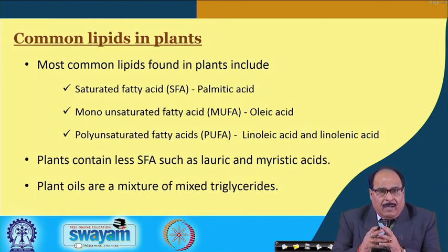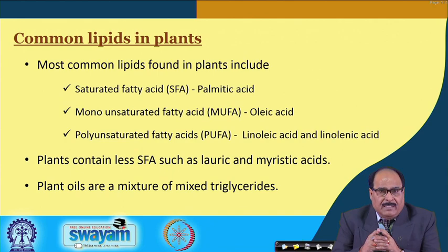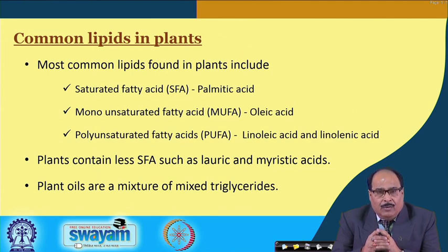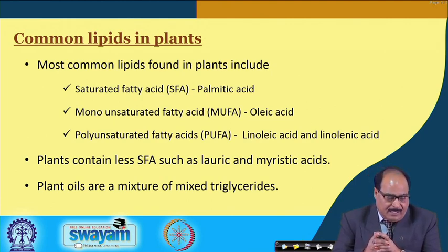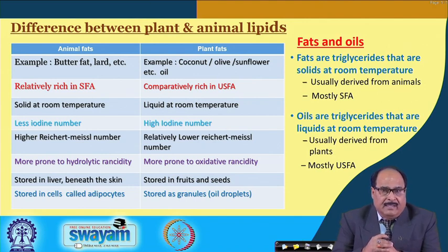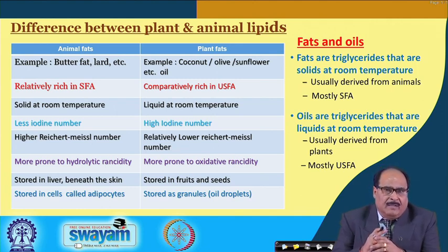The commonly found lipids in plant systems include saturated fatty acids like palmitic acid, monounsaturated fatty acids like oleic acid, and polyunsaturated fatty acids such as linoleic and linolenic acids. Plants contain comparatively less saturated fatty acids like lauric and myristic acids. Plant oils are mixtures of mixed triglycerides.